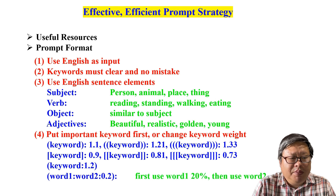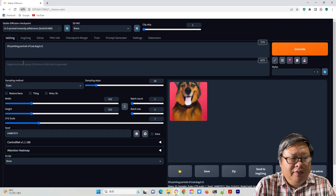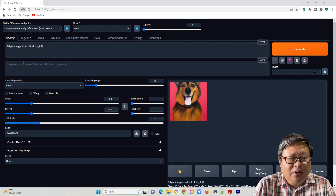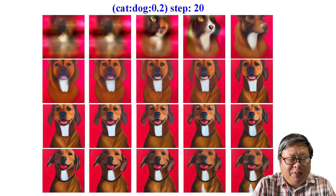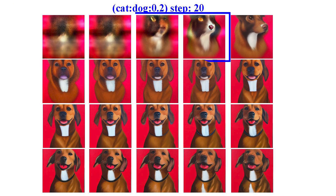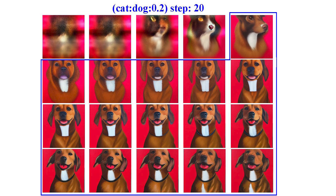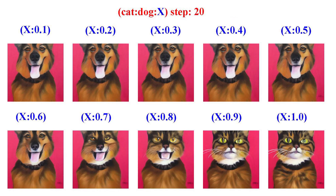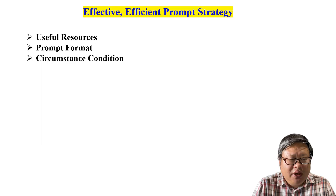Also, the weight can be blended. For example, an oil painting pattern of [cat:dog:0.2] using step 20 means the first four steps use cat and the following 16 steps use dog as a model. Here we show the changing effect of the different weights.